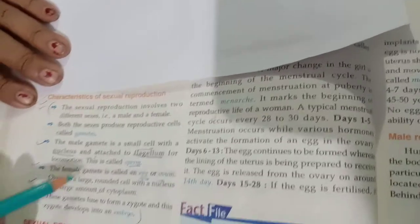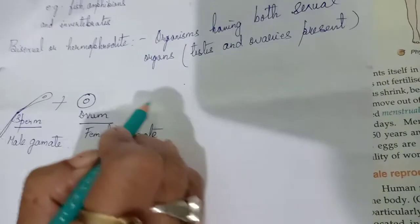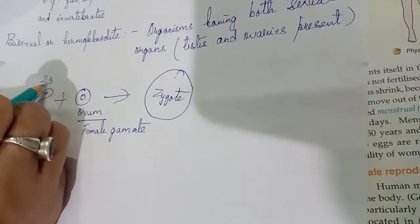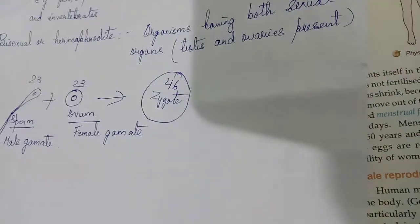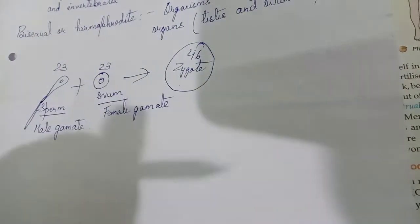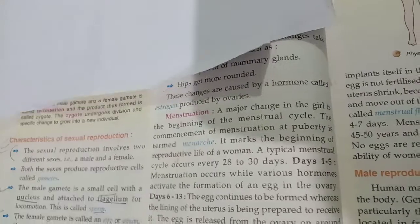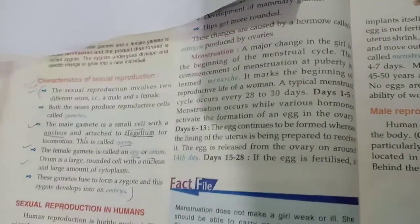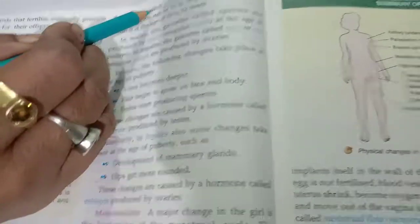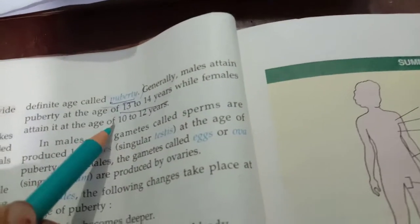When the male gamete (sperm) and the egg (ovum) fuse, they form a structure called a zygote. The sperm has 23 chromosomes and the ovum has 23 chromosomes, so the zygote has 46 chromosomes. This zygote divides and redivides to form a tiny embryo, and later develops into a young baby called a fetus, which grows inside the mother's womb.